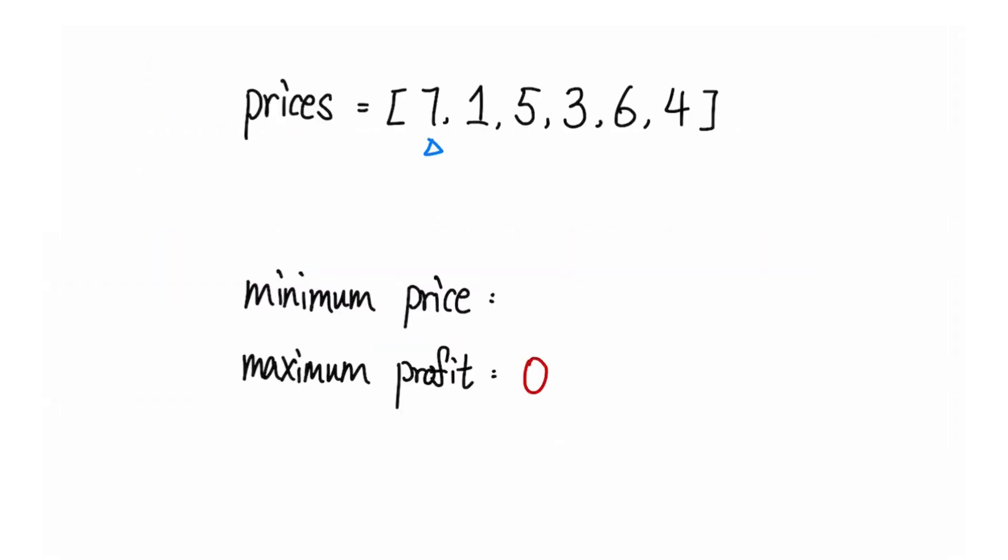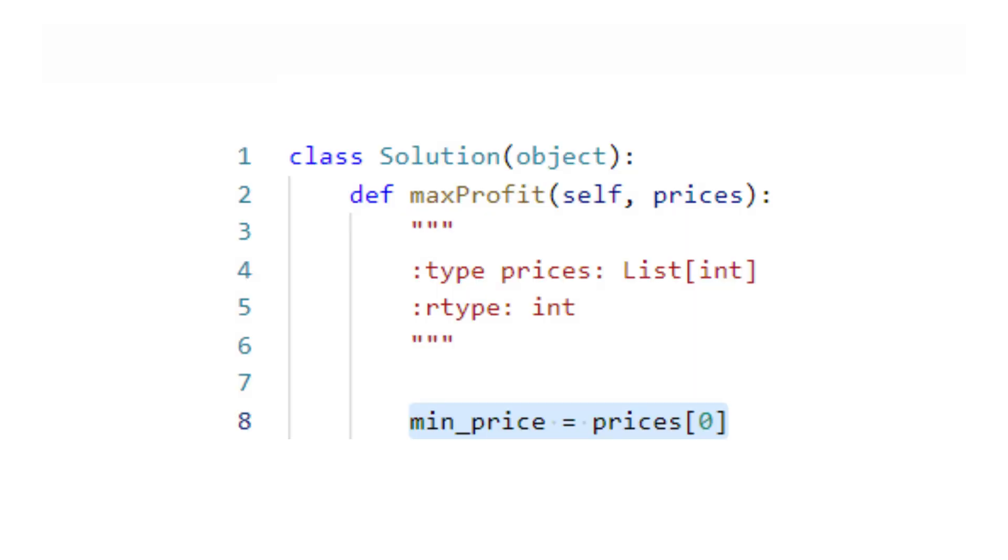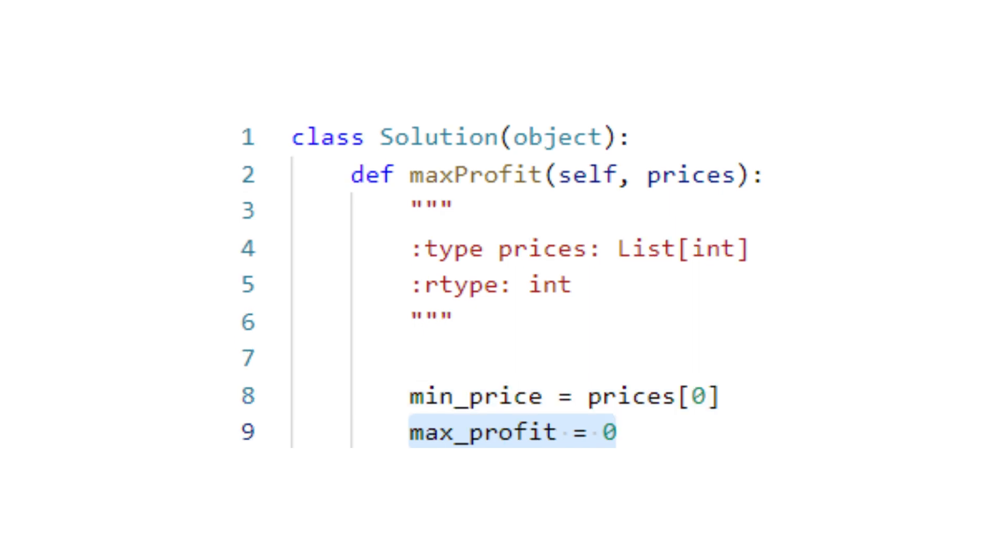To solve this problem, we can iterate through each price and keep track of the minimum price of the stock we have seen so far, and the maximum profit we can make by selling the stock at a current price. We start by initializing the minimum price variable as the first price in the array, and the maximum profit as zero.